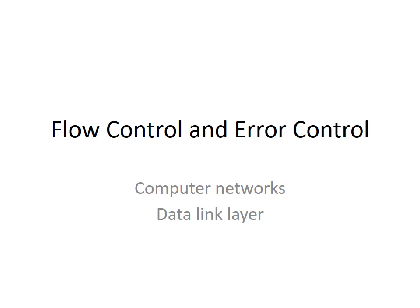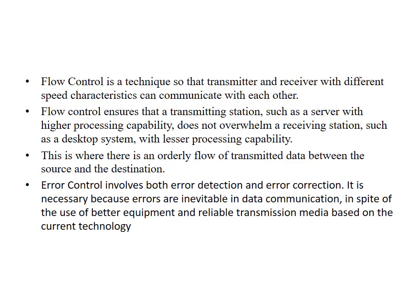Today we are going to discuss flow control as well as error control. Flow control is a technique where we have two entities — one will be the sender and the other one will be the receiver — connected with each other using communication media such as optical cable, LAN cable, or coaxial cable. The flow between the sender and the receiver should be the same.